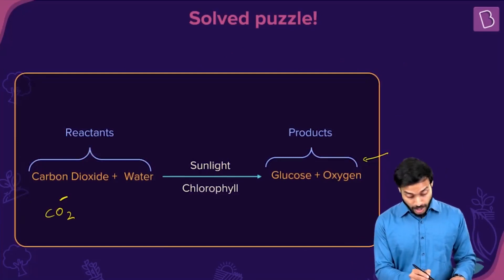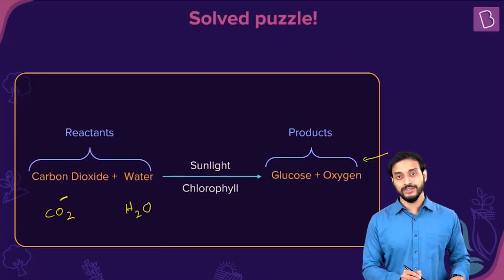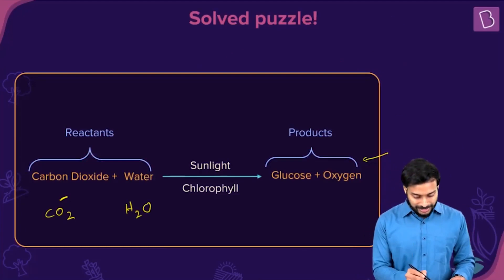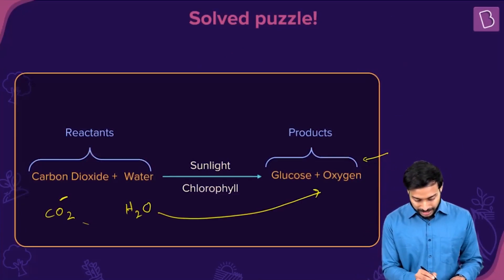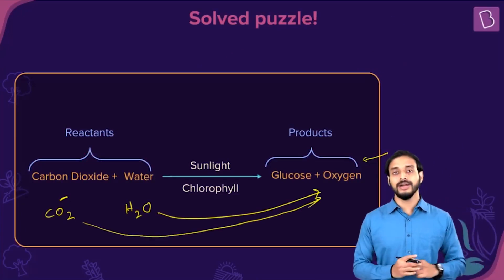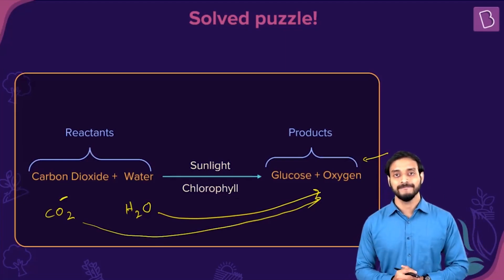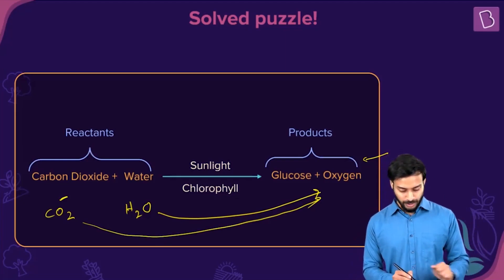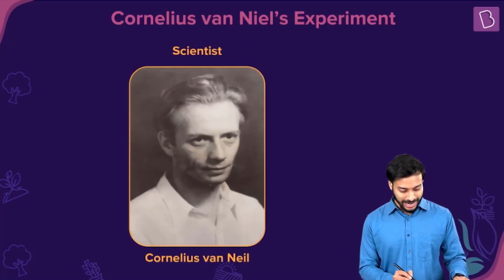In photosynthesis, CO2 has oxygen and H2O has oxygen. So where does this oxygen come from? Does it come from carbon dioxide? We'll prove it.